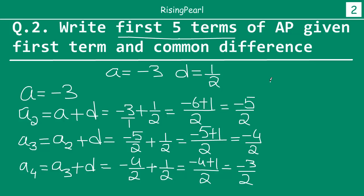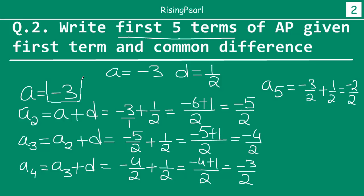And similarly the fifth term, the final term, will be minus 3/2 plus 1/2. This will be: denominator is 2 and numerator is minus 3 plus 1, giving us minus 2/2. So if we have to write out all the terms, we start with minus 3 — our first term is minus 3.